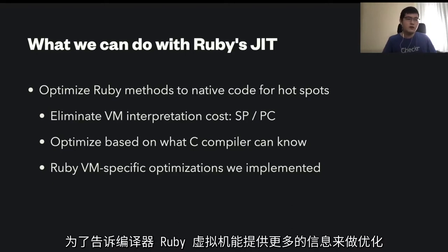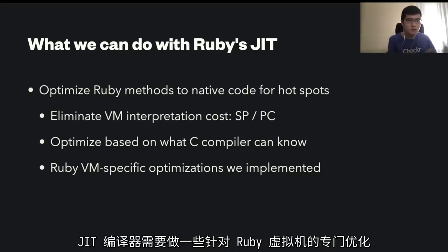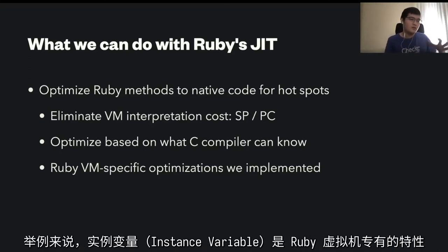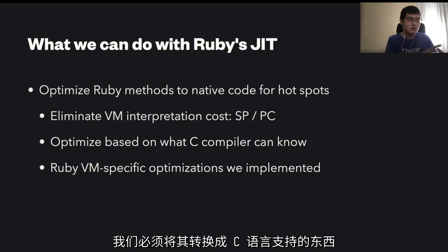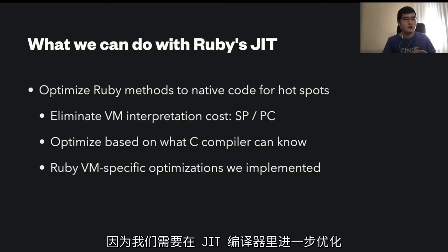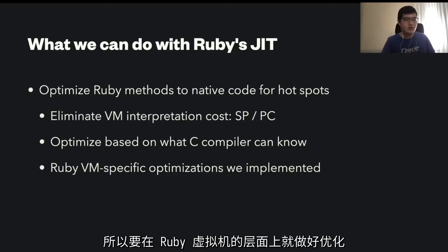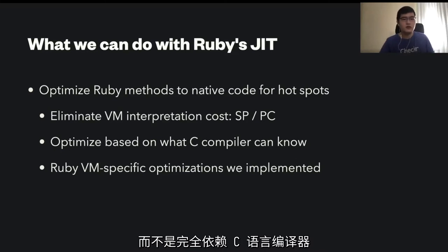It's still limited to what C compiler can know. To tell the C compiler that Ruby VM has more information usable for optimizations, the JIT compiler manually needs to implement some Ruby VM-specific optimizations. For example, instance variables are a very Ruby VM-specific feature. If we want to optimize instance variables, we need to manually translate the Ruby VM instructions to C native things. That kind of thing needs to be in the JIT compiler — we need to implement some optimization in our own layer, not just relying on the C compiler.